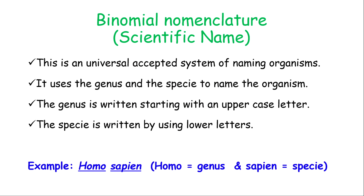Another very important key point is that when writing a scientific name, you either italicize the words or underline them. So the rules are: the genus is always written first, starting with an uppercase letter; then the species, written in all lowercase letters; and the scientific name must be italicized or underlined, especially when typing.